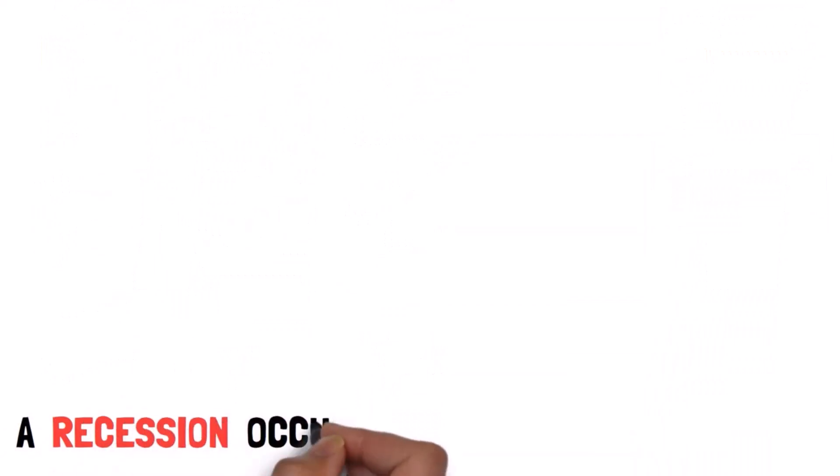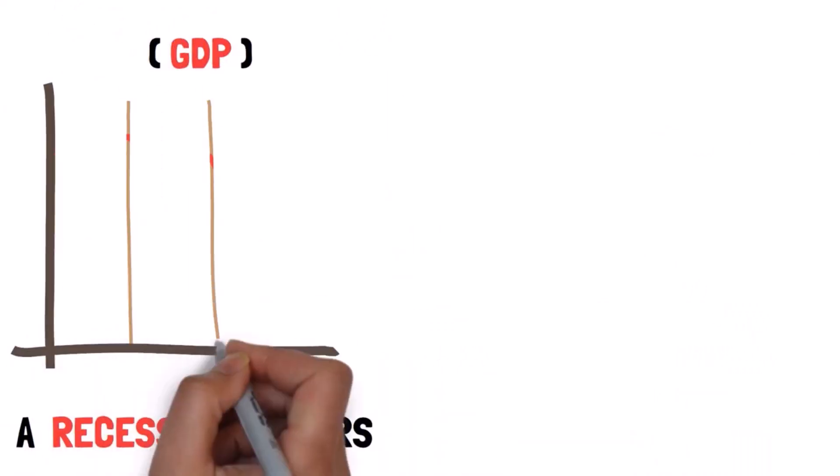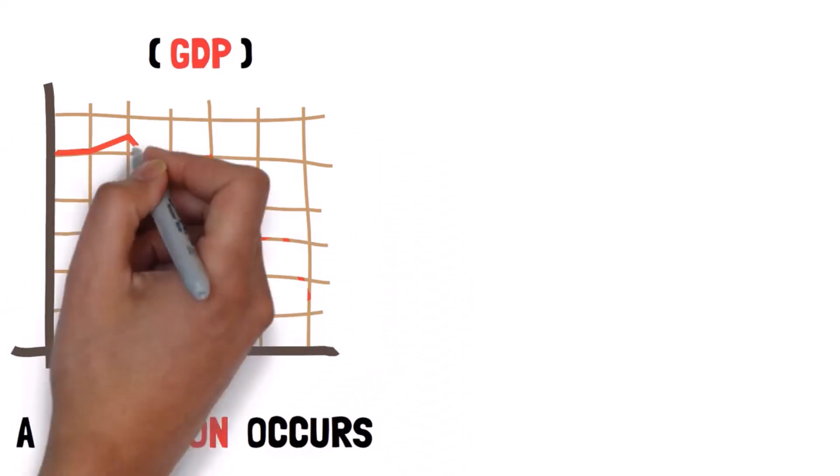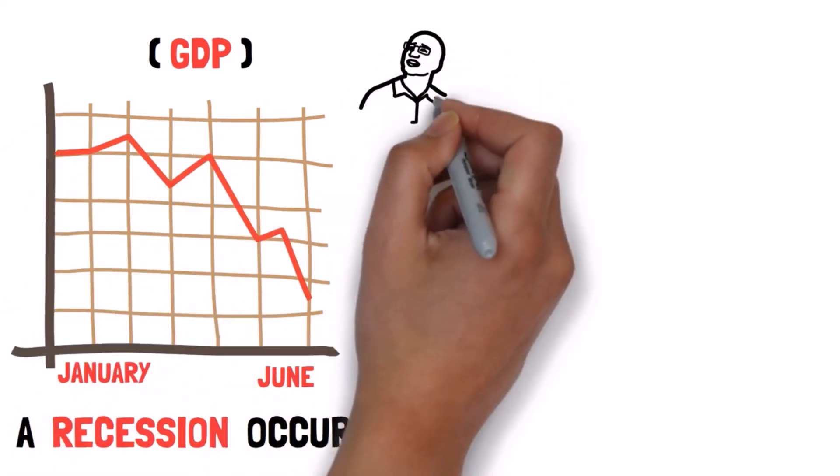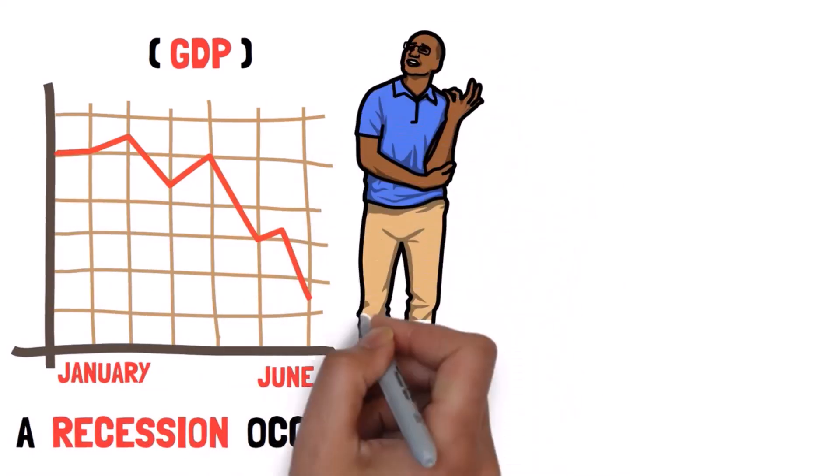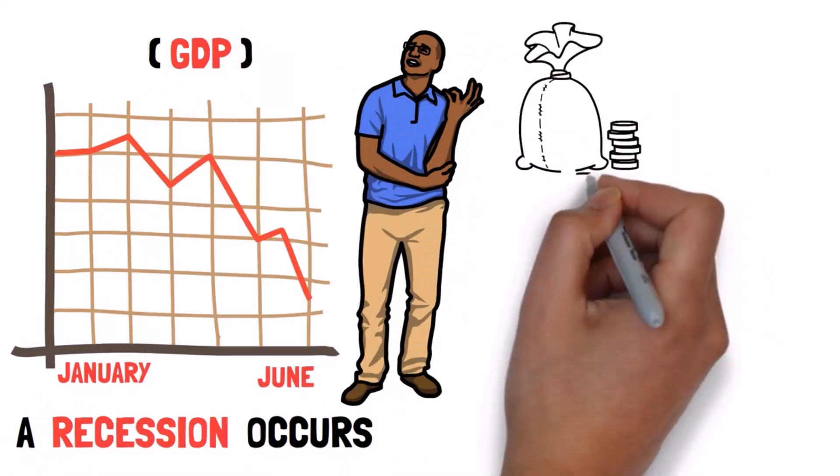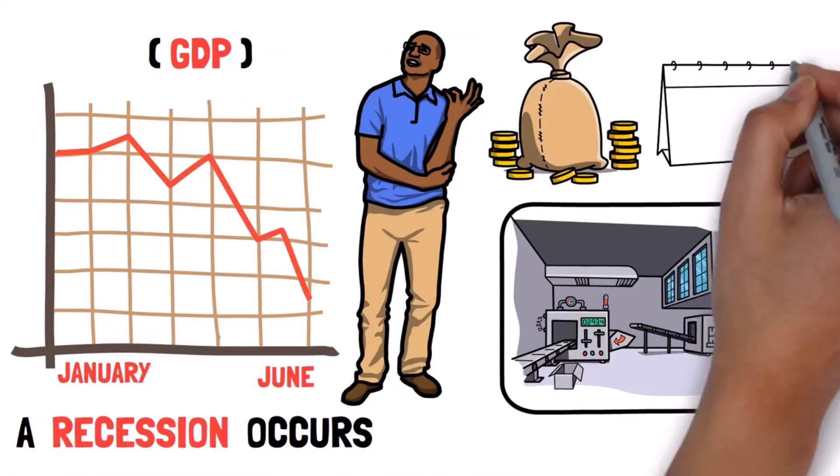A recession occurs when the gross domestic product, GDP, decreases for two consecutive quarters. Another factor to understand is GDP, which is the total value of everything produced in a country in a given period.